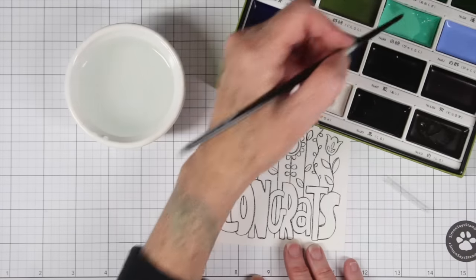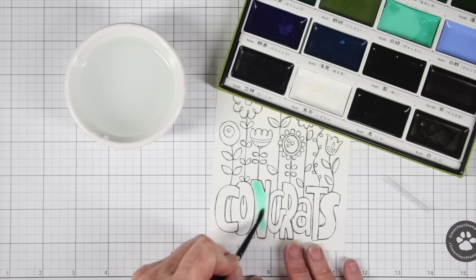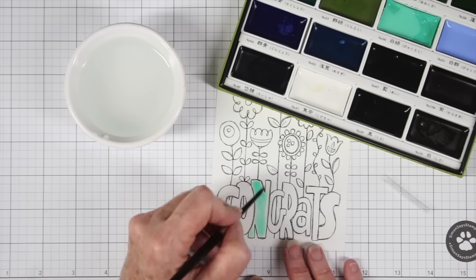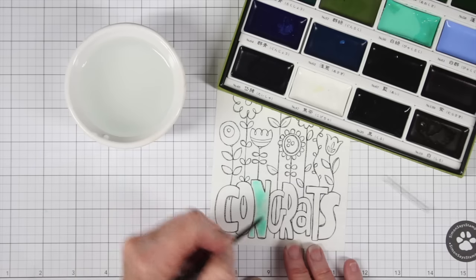This is called wet-on-wet painting. I'm going to grab some of that wet paint from the palette and drop it right into the area that is wet on my watercolor paper, and it just flows right into where the water is. It will follow the design of what you've painted with clear water.